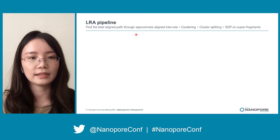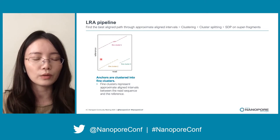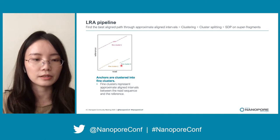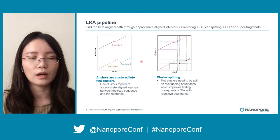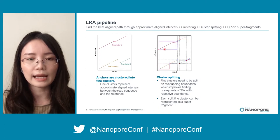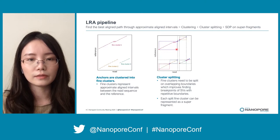In order to find the best aligned paths through approximate aligned intervals, there are several sub-steps conducted in LRA. First, LRA would partition anchors that are close to each other into fine clusters. Each fine cluster represents an approximate aligned interval between the read and the reference. Then those fine clusters would be split on overlapping boundaries, because the previous step tends to over-cluster anchors and the next step requires non-overlapping clusters as input. Each split fine cluster can be treated as a superfragment with a start and end.